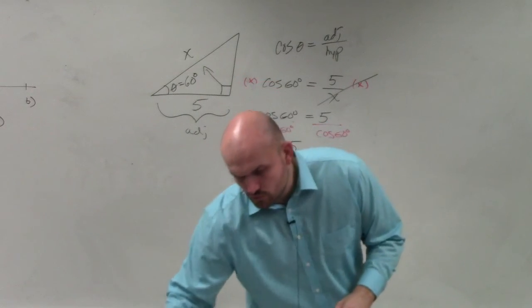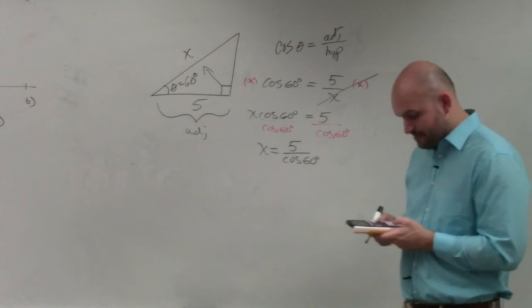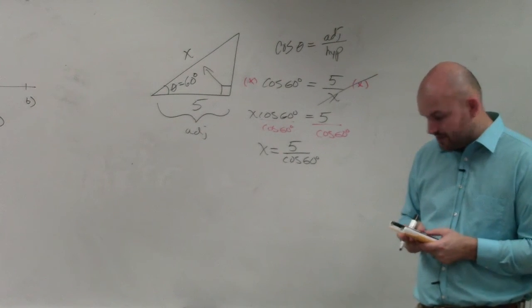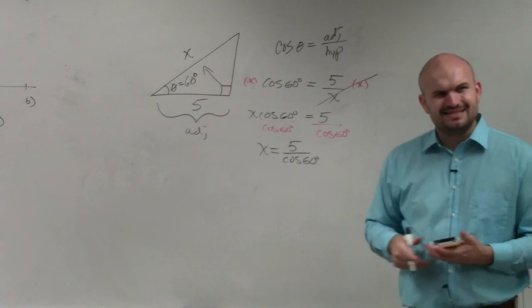But now, I'll type in my calculator, 5 divided by cosine of 60, and I get 10.